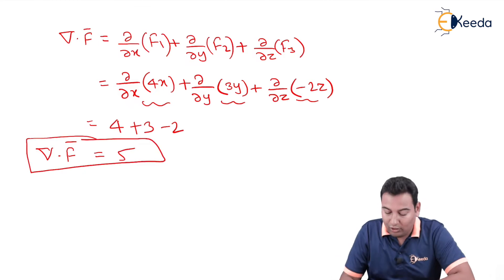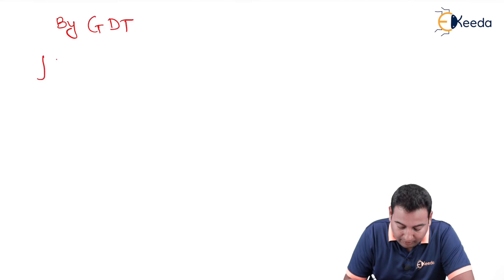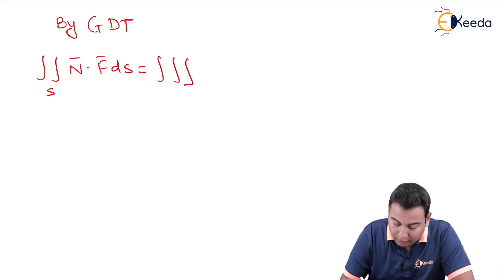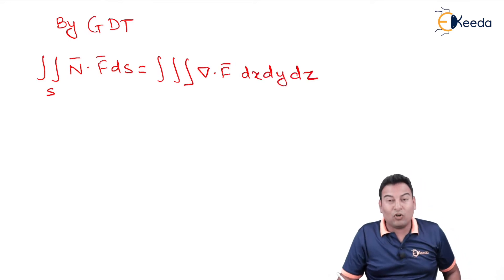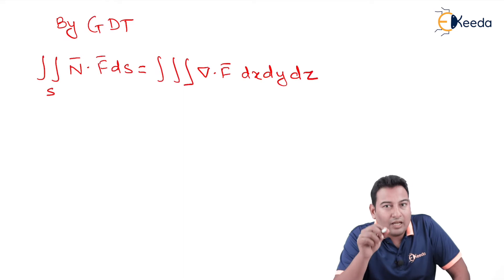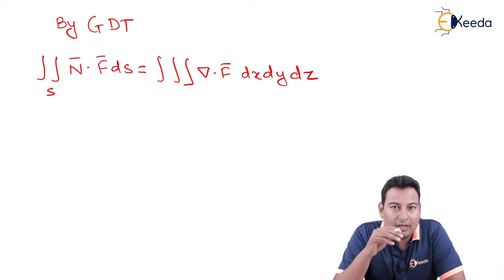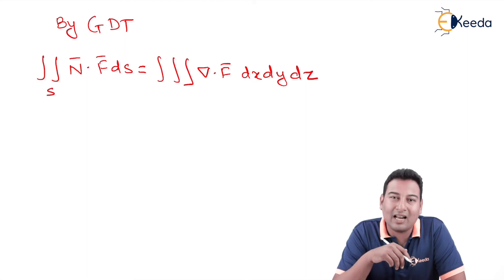We got the divergence. By the Gauss Divergence Theorem, the double integral over S of n̄ · F̄ dS equals the triple integral of (del · F̄) dV, where dV = dx dy dz. Now we need to find the limits. In the last problem, limits were already given (z: 0 to 1, y: 0 to 1, x: 0 to 1), but here limits are not provided directly.